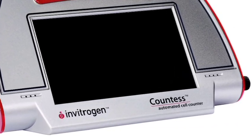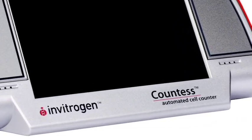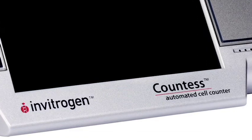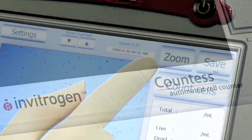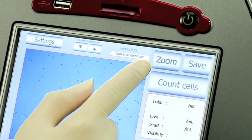Based on a standard Trypan Blue assay and requiring no more sample than needed for a hemocytometer, the Countess Automated Cell Counter is compatible with a wide variety of eukaryotic cells.